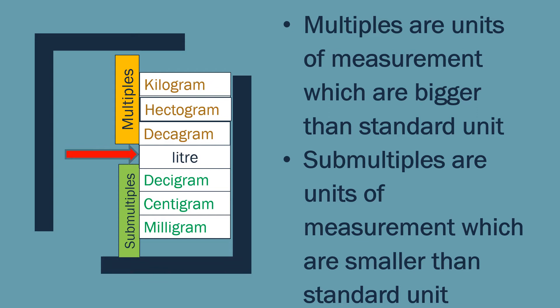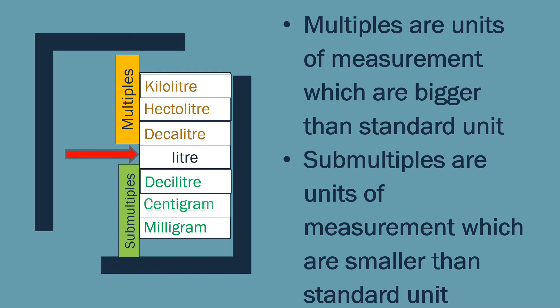The next standard unit is liter, which is for measuring capacity. Its multiples are decaliter, hectoliter, and kiloliter, and its submultiples are deciliter, centiliter, and milliliter. All of these are units of capacity, arranged from higher to lower.